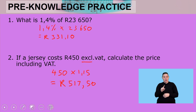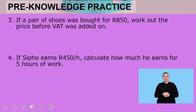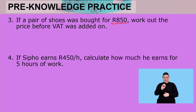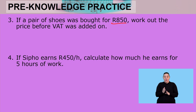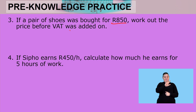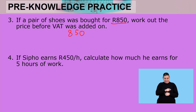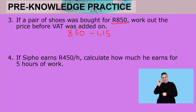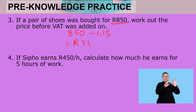Question three: If a pair of shoes was bought for R850, VAT is already in the price. Work out the price before VAT was added on. So the R850 already has VAT inside it — we've got to remove VAT. We divide by 1.15, and we get R739.13.